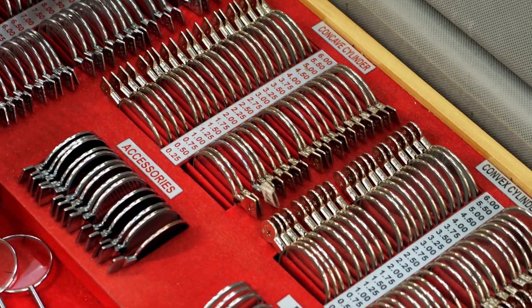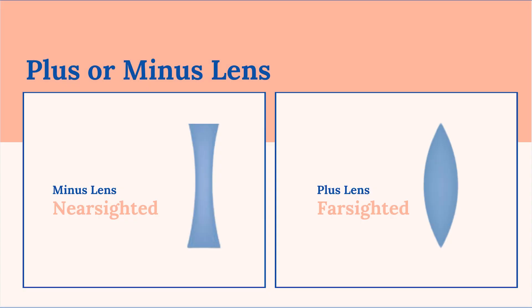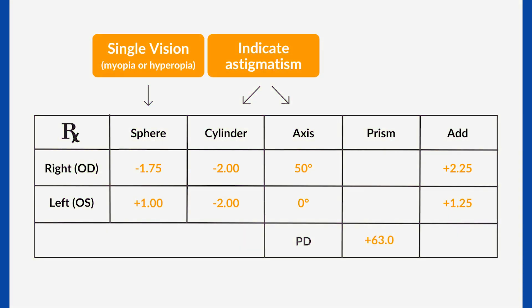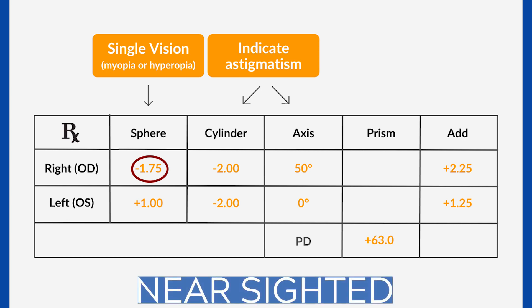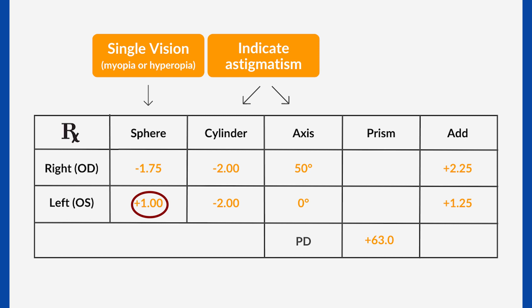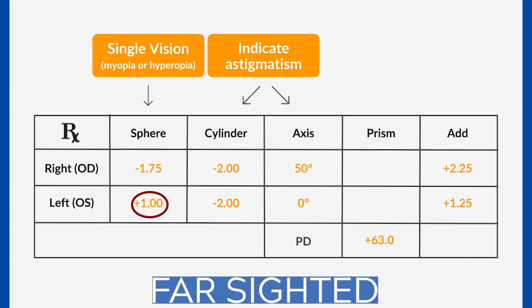Sphere refers to the type of spherical lens needed to center the light onto your retina. This is where you can tell if you are nearsighted or farsighted. If you have a minus number in the sphere column, you are nearsighted. If you have a plus number, you're farsighted. Usually both eyes are the same, but some patients are nearsighted in one eye and farsighted in another — that's not unusual.